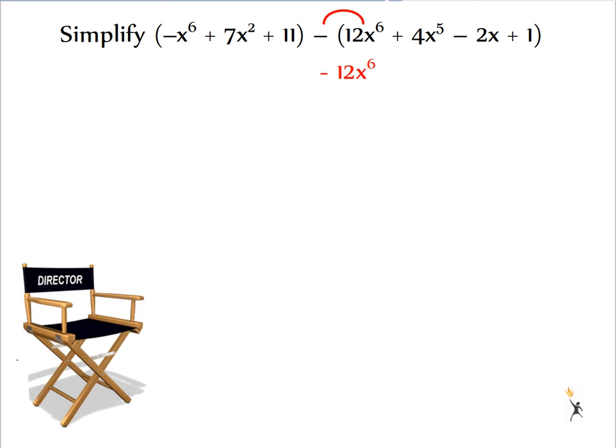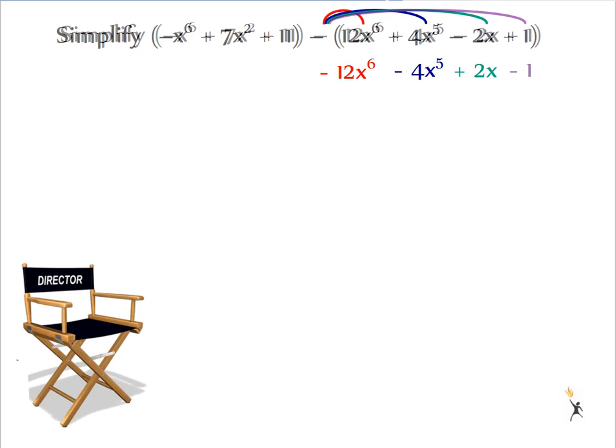Distributing to the 12x to the 6th gives me negative 12x to the 6th. Then I'm subtracting a 4x to the 5th. What happens when you subtract the negative 2x? Any time you have that double negative, it's going to become a positive. And then I subtract the 1.